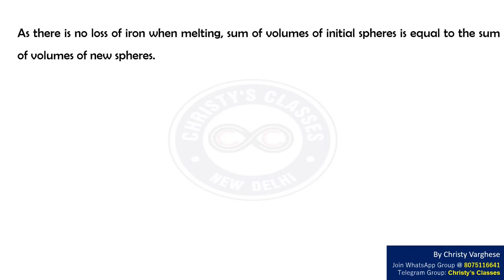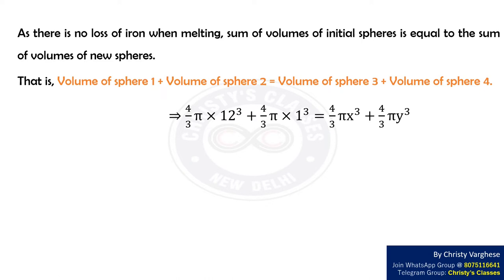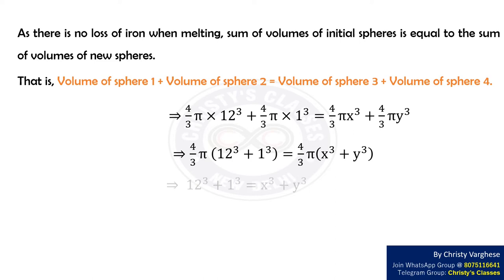As there is no loss of iron while melting, the sum of volumes of the initial spheres equals the sum of volumes of the new spheres. That is, volume of sphere 1 plus volume of sphere 2 equals volume of sphere 3 plus volume of sphere 4. This gives (4/3)π×12³ + (4/3)π×1³ = (4/3)πx³ + (4/3)πy³. On canceling the common factors, this implies 12³ + 1³ = x³ + y³, that is x³ + y³ = 1729. Let this be equation 5.